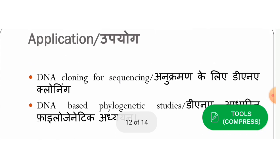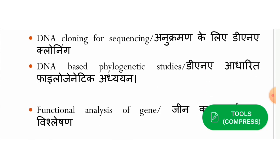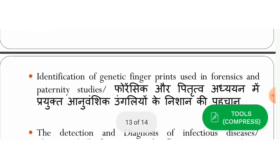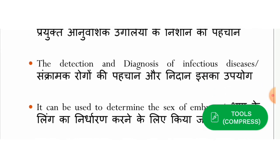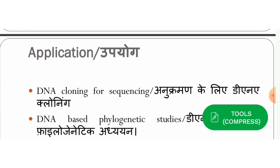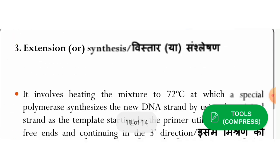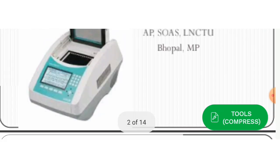Major applications include DNA cloning, and most importantly, genetic fingerprinting for identification in paternity studies and forensic science. As you saw during the COVID pandemic, COVID detection uses a kind of PCR called real-time PCR. So this is the polymerase chain reaction.